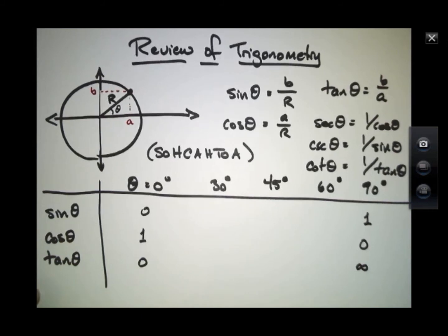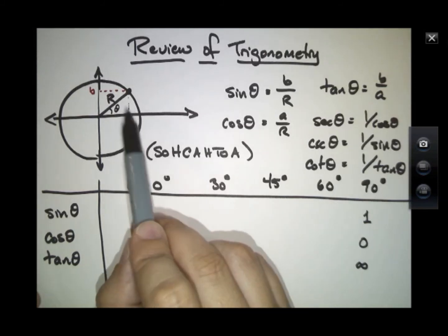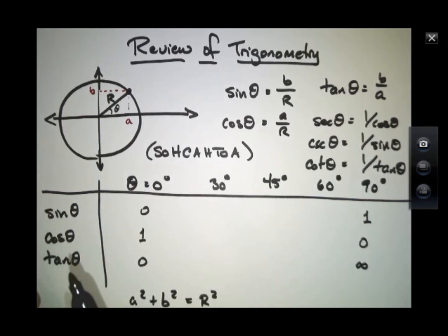In between, how do we remember how to calculate these things? We use Pythagorean's theorem. And we remember that for any of these angles, this coordinate A squared plus that side B squared equals R squared, and that's because this is our right triangle.